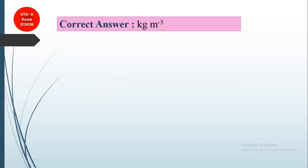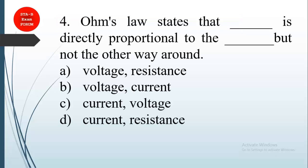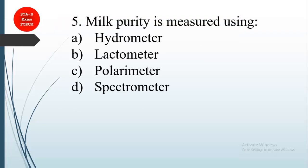Coming to the next question, again it is from physics. Ohm's law states that blank is directly proportional to blank, but not the other way around. This is a little bit confusing. The correct answer is option B: voltage and current. Voltage is directly proportional to current, but not the other way around. Generally, V equals IR, so voltage is directly proportional to current I, not I is directly proportional to voltage.